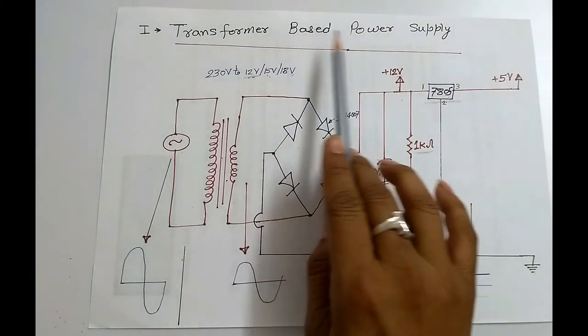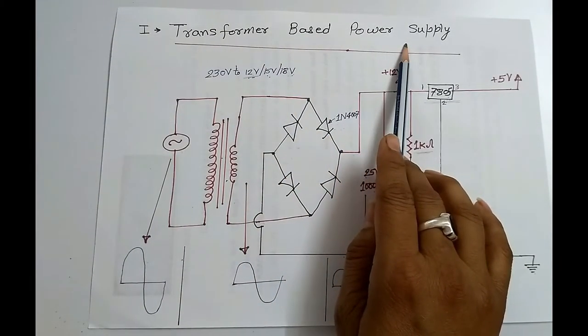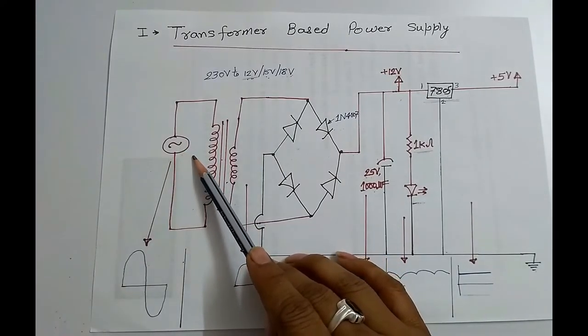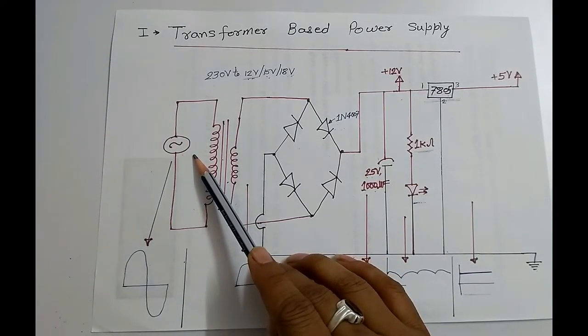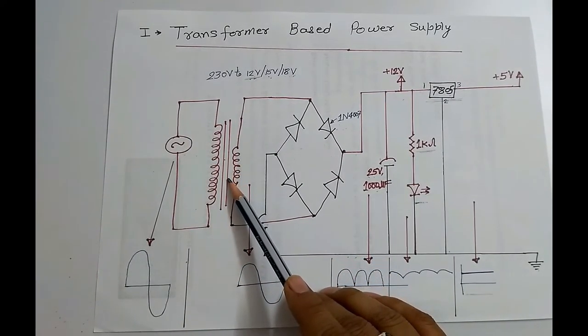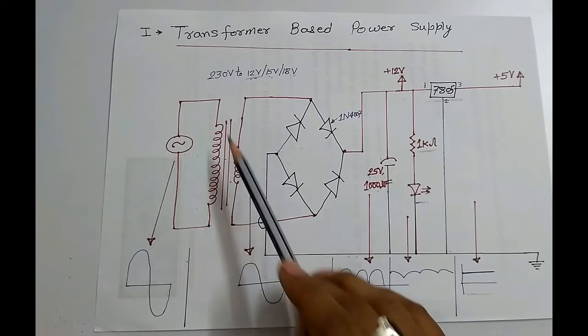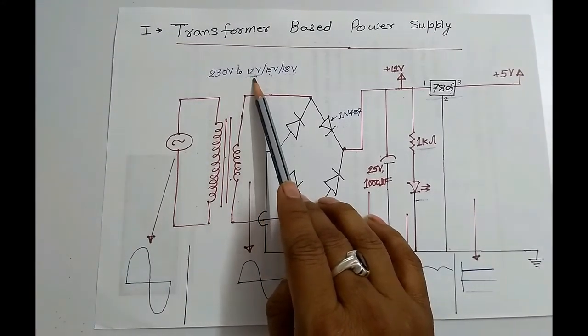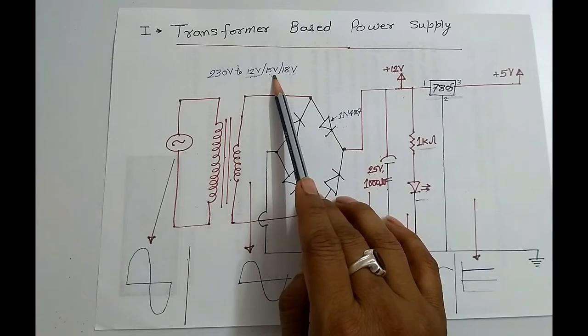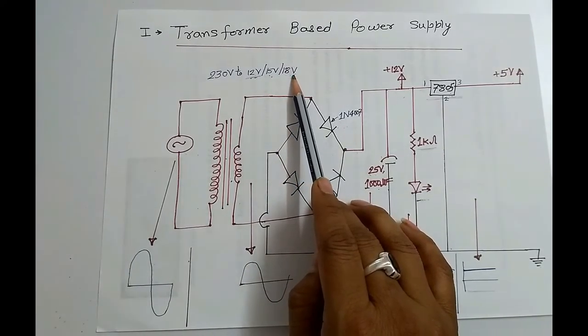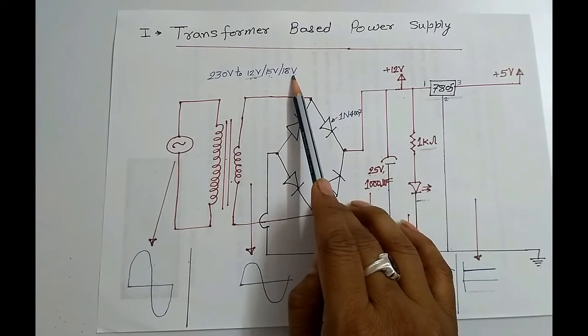Let's see transformer-based power supply. Here you can see that this is AC supply that is given to the step-down transformer. This step-down transformer can be 230V to 12V or 15V or 18V or based on your requirement.